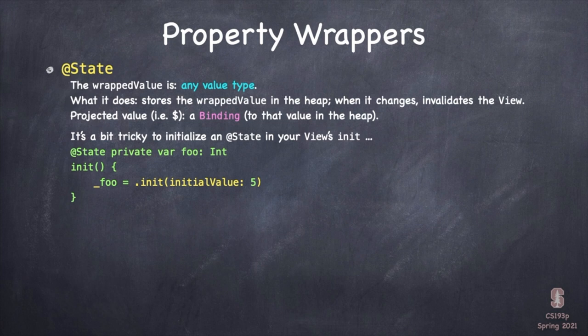One tricky thing: if you say @State private var something of a certain type without saying equals something, and you want to initialize it in your init, you have to initialize the underbar version — the actual State struct. You do that by saying _foo = .init with some initial value. We don't initialize @State vars in our init very often, but occasionally we might want to.